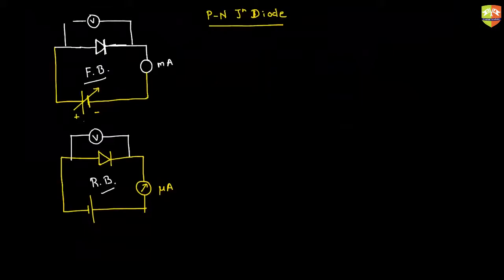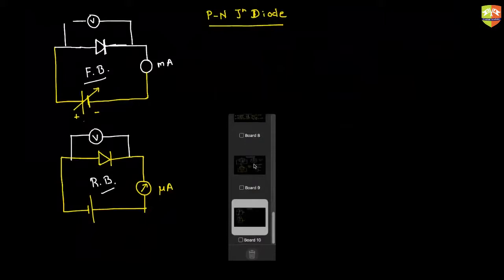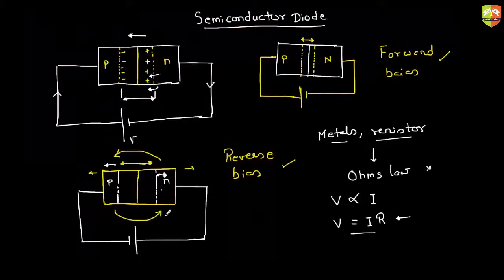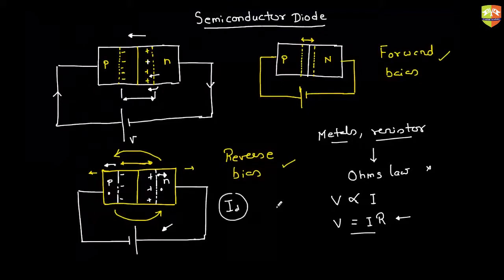In reverse bias, a small current does flow. If electrons from the N side jump to the P side, there will be a current. This happens due to diffusion — higher concentration is on the N side, lower on the P side. Even after equilibrium, there is a small diffusion current due to flow from higher to lower concentration, but it is negligible, which is why we say the diode behaves like an insulator in reverse bias.